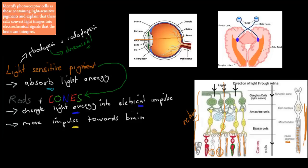After light has gone all the way down to the rods and cones, the electrical impulse is sent back up through all these different types of nerve cells, heading towards the brain. Light comes down, hits the rods and cones, their light-sensitive pigments (rhodopsin or iodopsin) absorb the light, and then the rods and cones convert it into electrical energy. That signal travels up through these neurons towards the optic nerve, and then all the way to the brain itself, where our image is formed — the brain interprets those electrical impulses and creates an image.